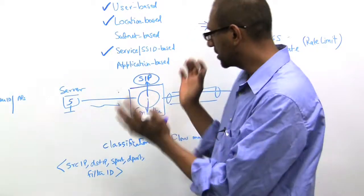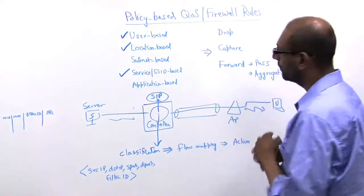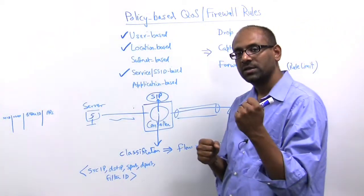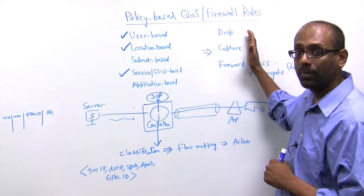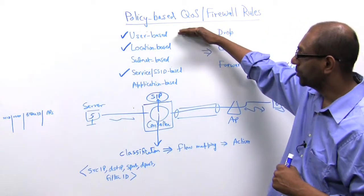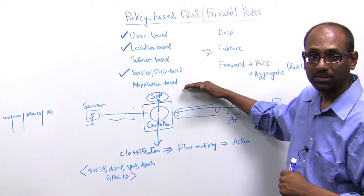So the point of this discussion is to talk about how, in a single framework, we are able to capture both quality of service parameters as well as firewall parameters. And we are able to do this on the basis of user, location, subnet, SSID, and applications. Thank you.